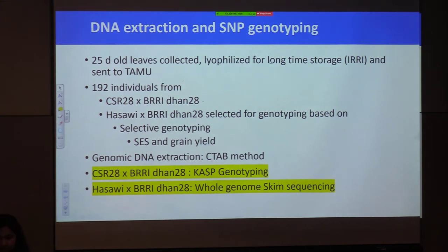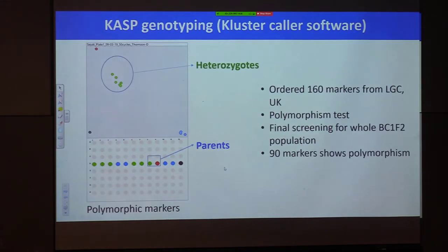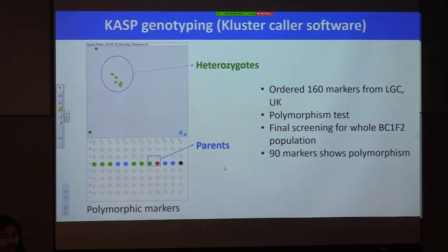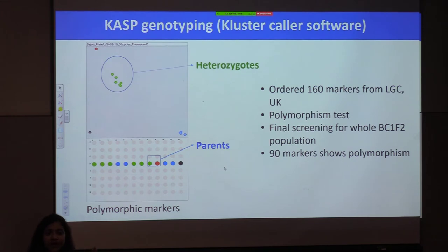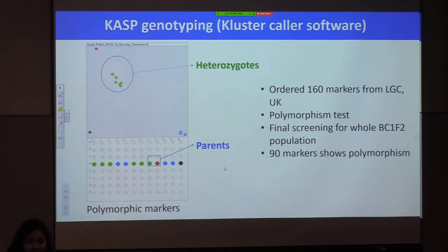Transportation issues caused degradation, which is why we're using KSP — and it works well now. For the KSP work, we used the Cluster Color software. Initially we ordered 160 markers from LGC and did a first polymorphism test to confirm which markers were truly polymorphic before final screening. In final screening — one marker at a time across all 192 individuals — 90 markers showed polymorphism. I'm still working on this and plan to design more markers within this month.